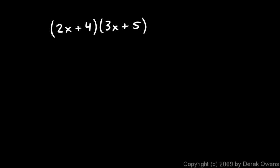Okay, one more example using the FOIL technique. I'm going to do first outer inner last. So my first terms are 2x times 3x, that gives me 6x². And then my outer terms are 2x times 5, and that's 10x.